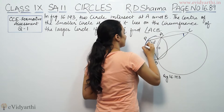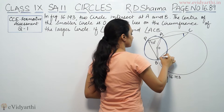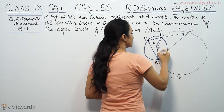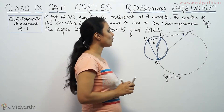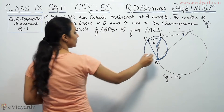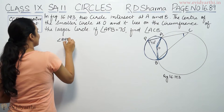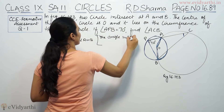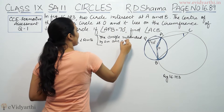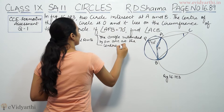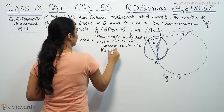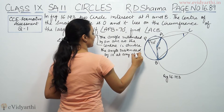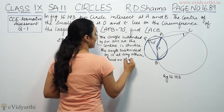Now, looking at this circle, this arc is subtending an angle at the circumference, and the angle at the center is the corresponding central angle. The angle at the center becomes double the angle at the circumference. That means angle APB is equal to half of angle AOB, because the angle subtended by an arc at the center is double the angle subtended by it at any other point on the remaining part of the circle.